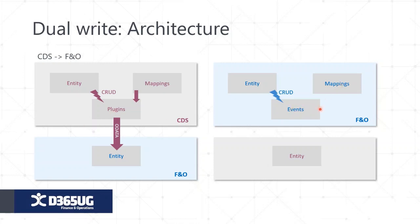On the other side, to move data from FNO to CDS, we also have entities on both sides and mappings again. Rather than plugins, in FNO at the platform level they have written events. These events capture table-level changes — insert, update, modify, validate — any event happening at the table level. They bubble up all these events to the entity level, and using mappings, they send data across to the CDS environment. This is the back-end architecture behind how data flows between both environments.